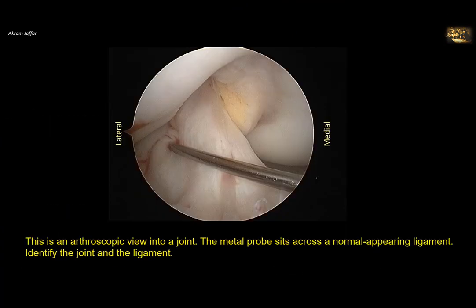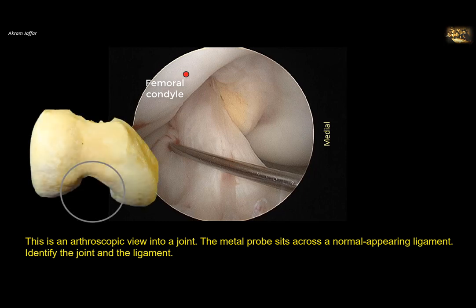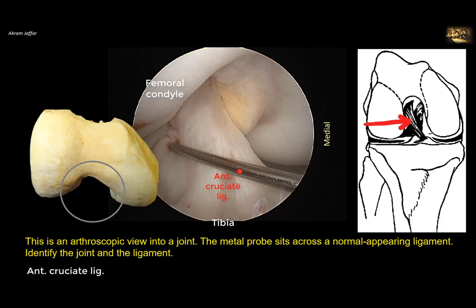This is an arthroscopic view into a joint. The metal probe sits across a normal-appearing ligament. Identify the joint and the ligament. You can see here the condyle of the femur — this is the lateral condyle. Look at the hyaline articular cartilage covering it. This is the other condyle, the medial condyle. This should be the tibia, and this is the cruciate ligament — the anterior cruciate ligament — an intracapsular ligament visible inside the joint.